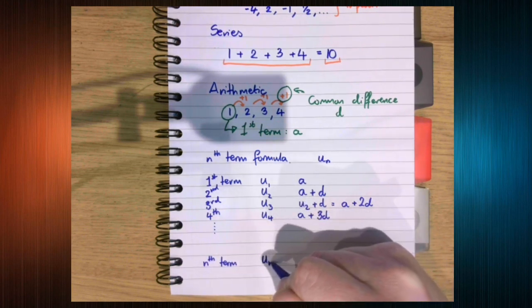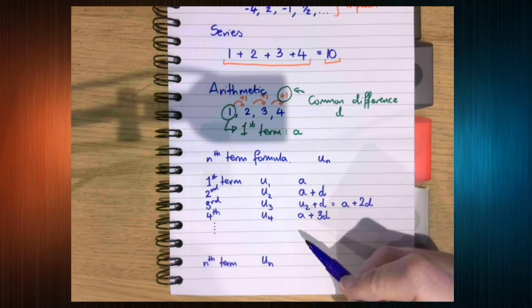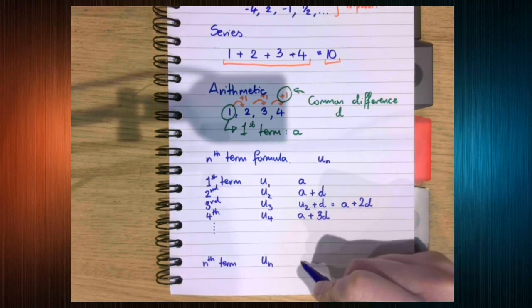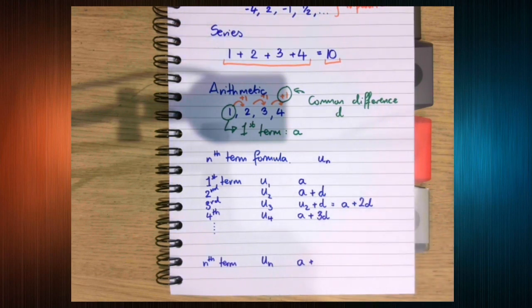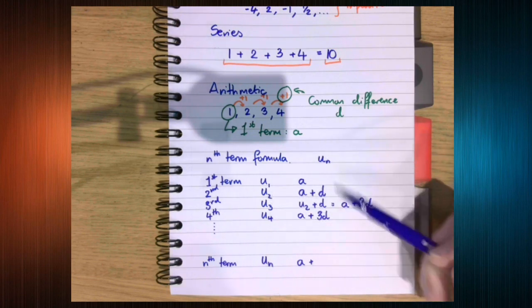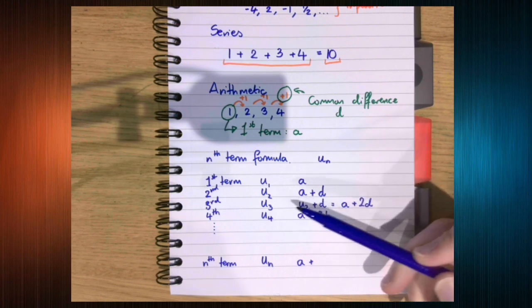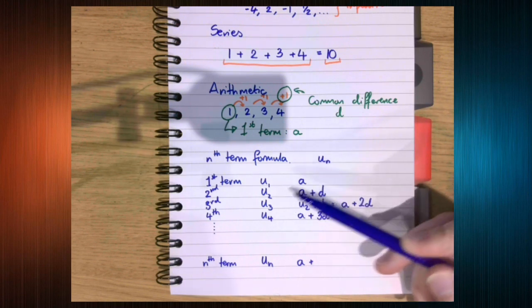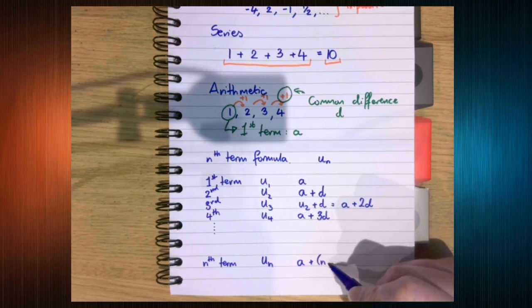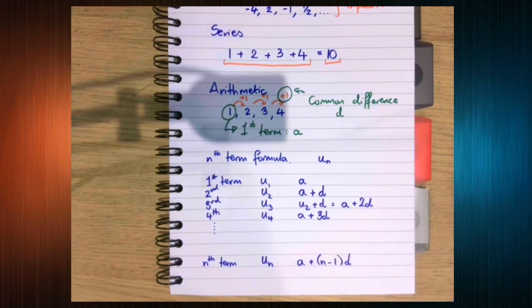So hopefully you've already started to see a pattern. So that we can write down the nth term of an arithmetic progression. You can see for each of them it's got an a in, and we're adding something. Here we had 1d and our term was 2. Here we had 2d and our term was 3. Here we had no d and our term was 1.